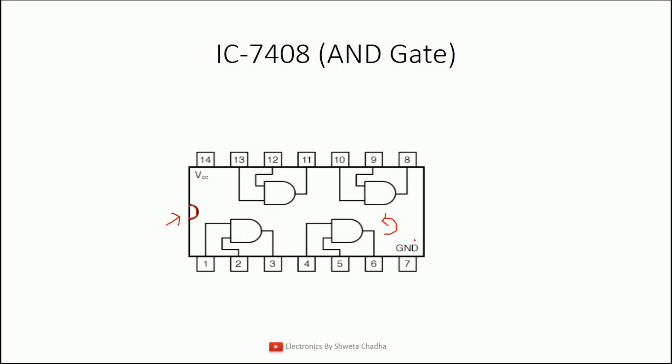Pin number 7 is connected with ground, which we will observe in almost all cases, and pin number 14 is connected with VCC. Without ground and VCC, your IC is not going to work.